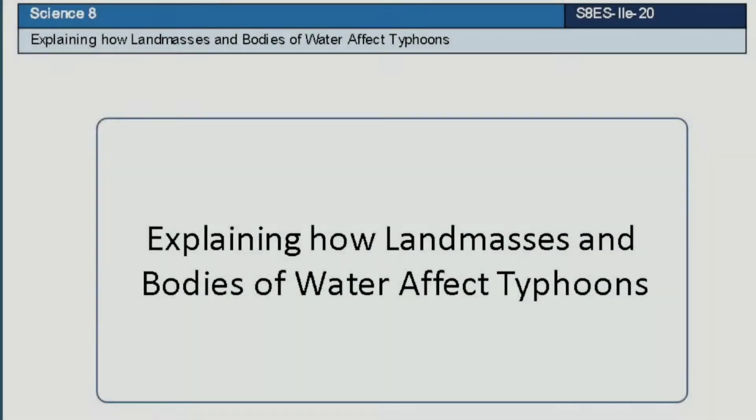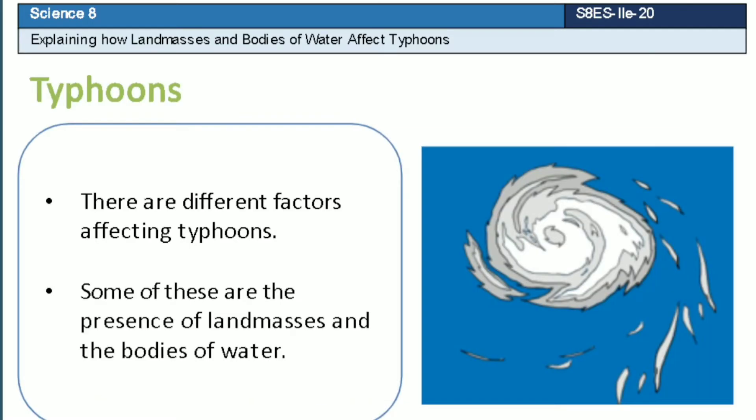Hi! Our topic is about explaining how landmasses and bodies of water affect typhoons. Let's begin. There are different factors affecting typhoons. Some of these are the presence of landmasses and the bodies of water.